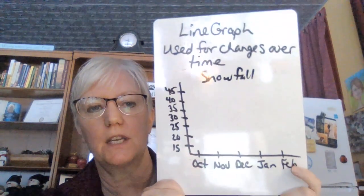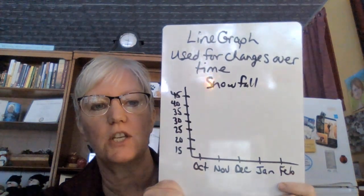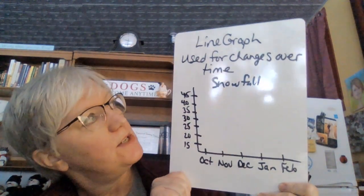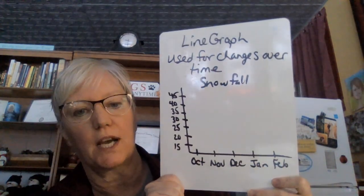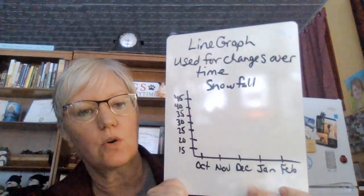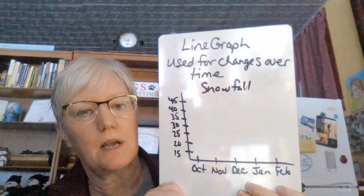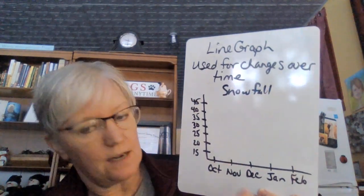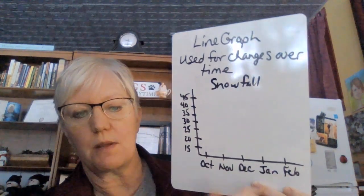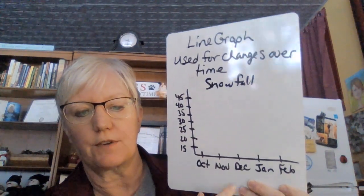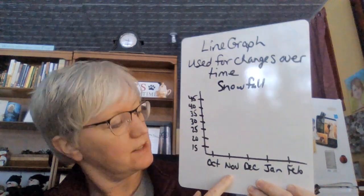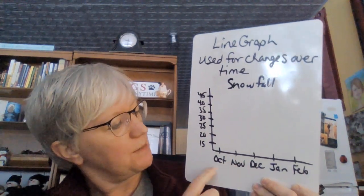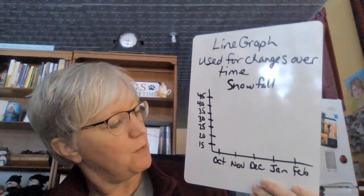A line graph is specifically used for marking changes over time — always used for changes over time. So when you make a graph that involves time, time always has to go on the bottom of the graph, or on the x-axis.